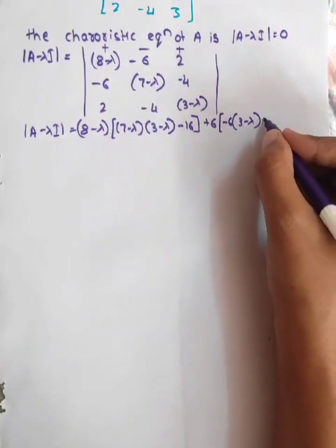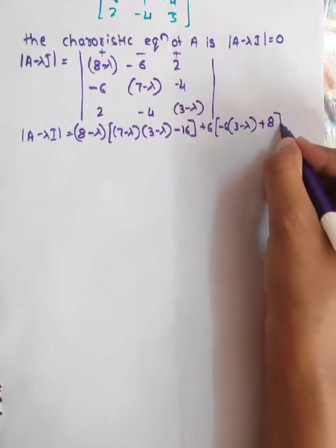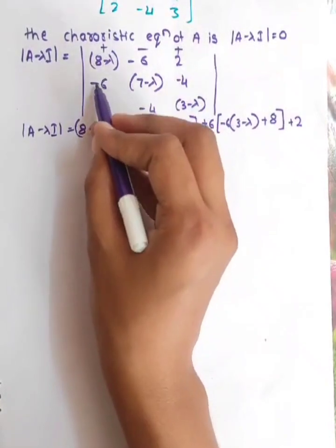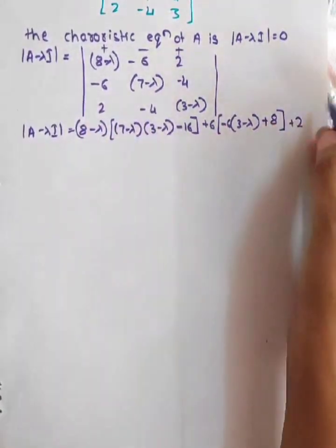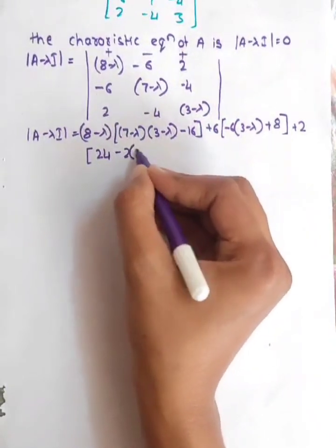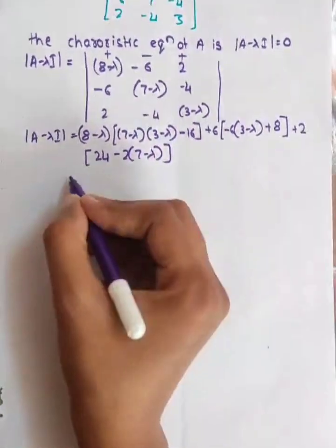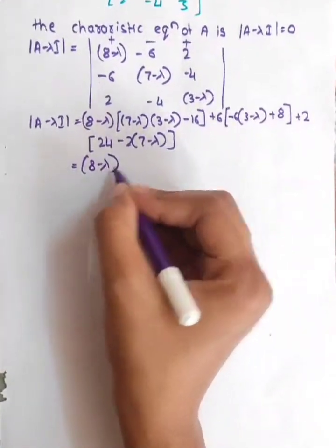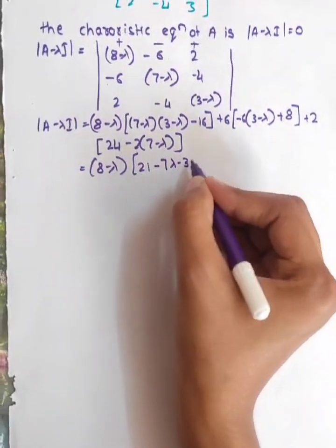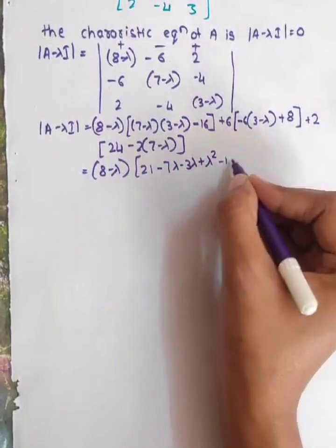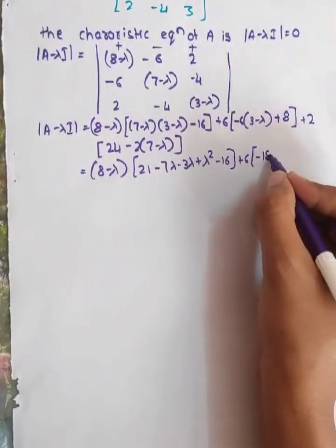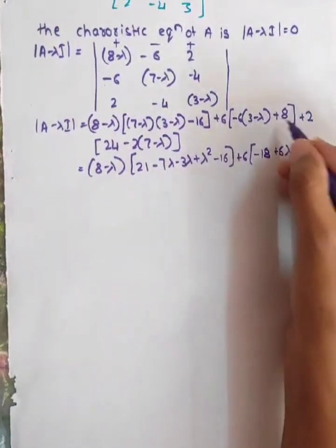Then plus 2 of: minus 6 into minus 4, which gives 24, minus 2 times (7 minus lambda). Here we expand: 8 minus lambda times (21 minus 7 lambda minus 3 lambda plus lambda squared), then minus 16 plus 6, then minus 18 plus 6 lambda plus 8.